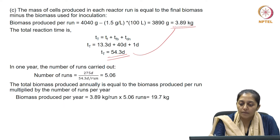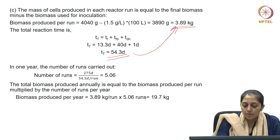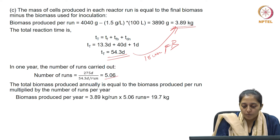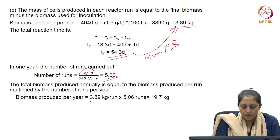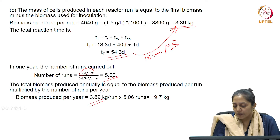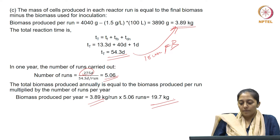With 275 operational days per year, 5.06 runs are possible, so we assume 5 runs. With a biomass yield of 3.89 kg per run, the total amount of biomass that can be produced annually comes out to be 19.7 kg.